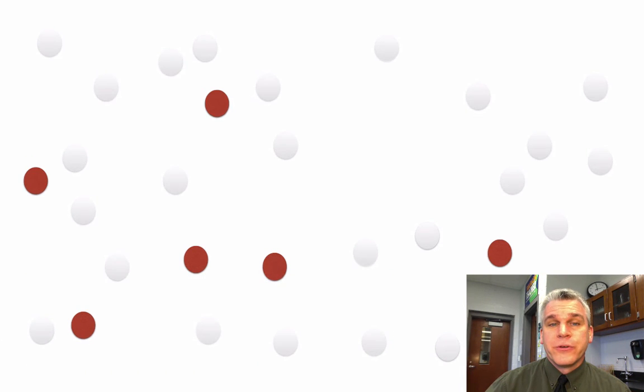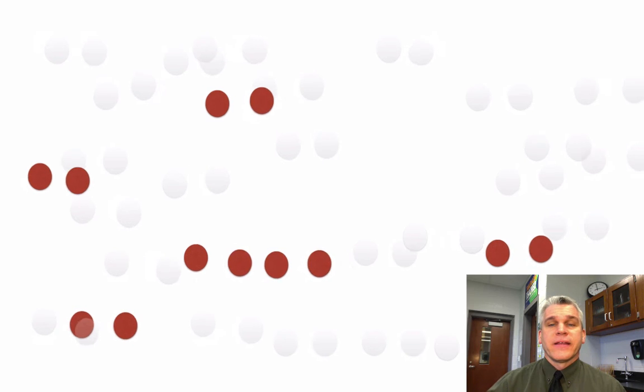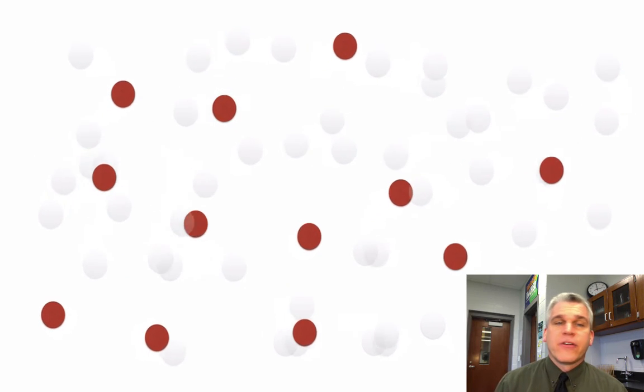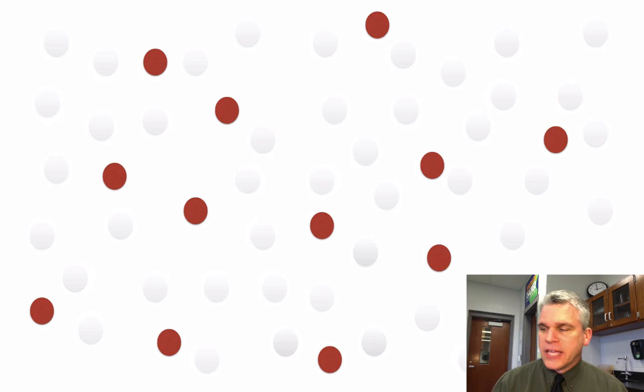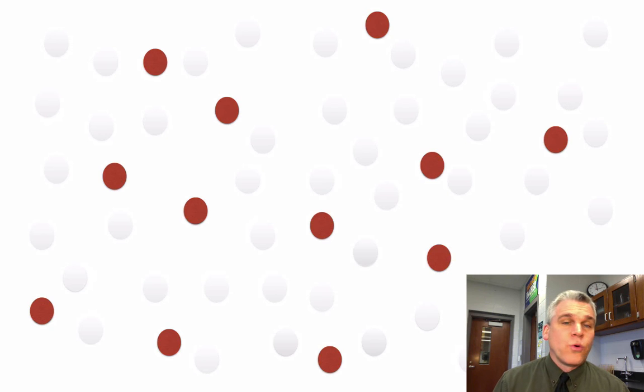Here are our survivors — the survivors get to reproduce and they're going to move around the environment. Notice how many white mice we have now. It's roughly about 80% gray and 20% red.